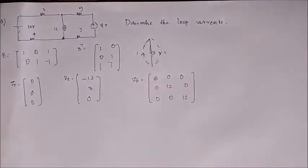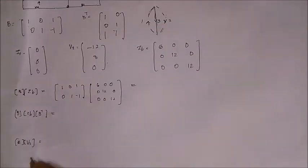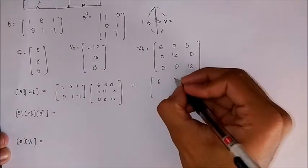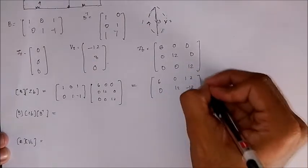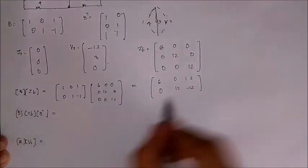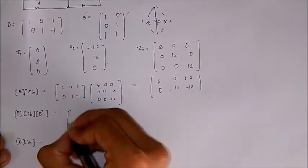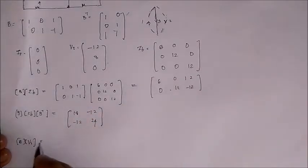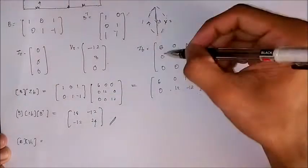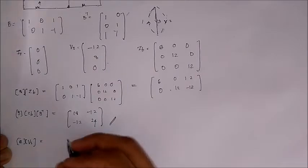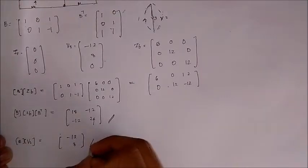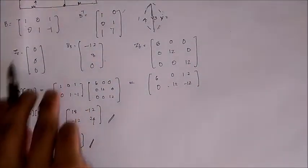So we got all the matrices now we just have to multiply and substitute in the equation. Multiplying these we would get matrix 6 0 12, 0 12 minus 12. Now ZB times B transpose we get another matrix 18 minus 12, minus 12 24. This is our left hand side and B into Vs we get as minus 12, 8.